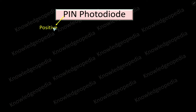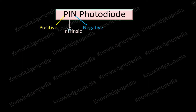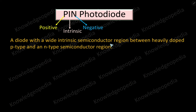From the name itself you can see it is PIN photodiode. Here P stands for positive, I stands for intrinsic, and N stands for negative. So it is a photodiode where we have three regions — one is positive, one is intrinsic, and one is negative — meaning there are three regions: P-type, intrinsic, and N-type.